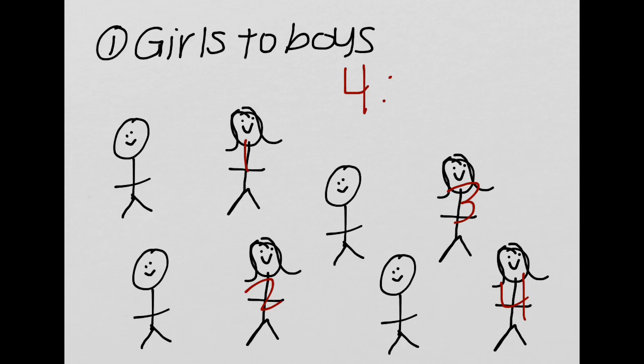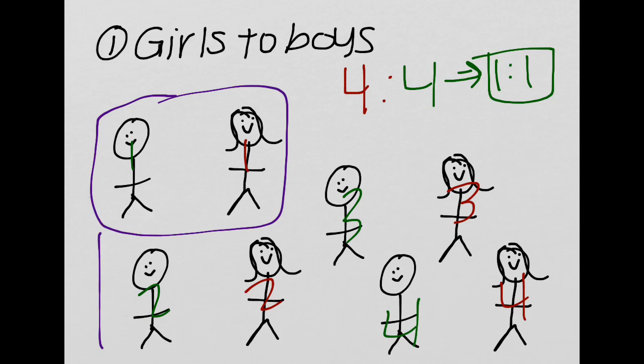Let's check how many boys. One boy, two boys, three boys, four boys. Now remember, we can reduce this to a one-to-one ratio. That means that the amount of girls and the amount of boys are the same, and as you can see, we can actually group these so that for every girl there is a boy.